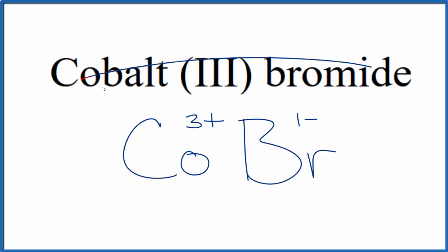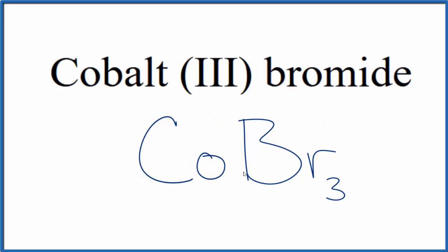So cobalt three bromide is neutral, doesn't say ion, we're going to make these charges balance. The way we do that, we could have three of these bromide ions. Three times one minus, that would balance out the three plus. So this is the formula for cobalt three bromide, CoBr3.